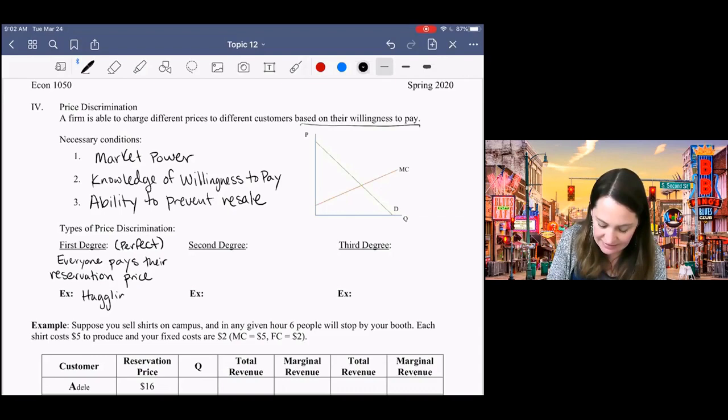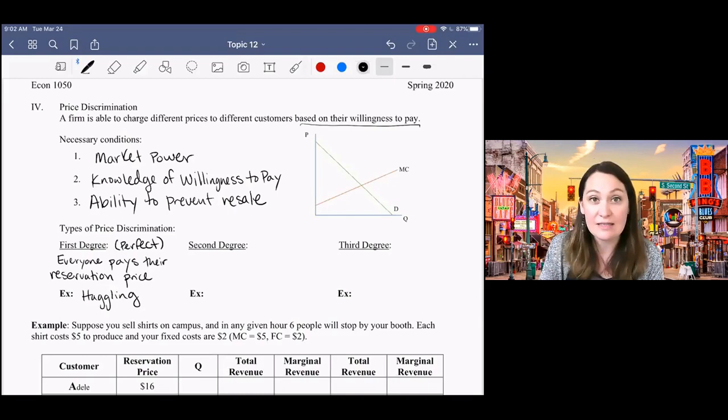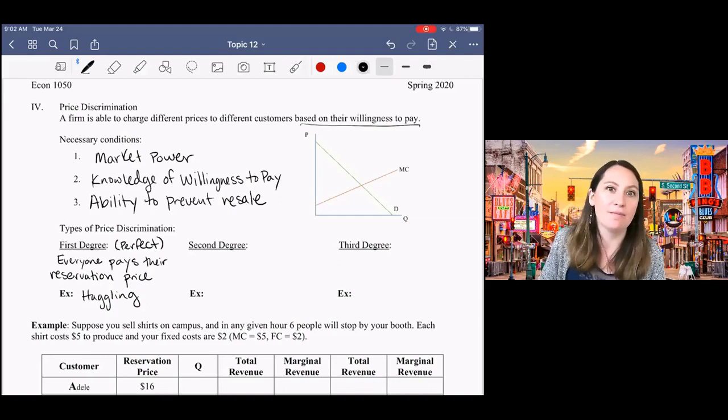The first is haggling. Haggling gets us something pretty close to this. If you've ever been to a market where there are no prices, like an antique store, this is common in other countries. In order to find the price, you have to ask the person working at the shop. That person will likely tell you some outrageously high number. They will say that t-shirt costs $200. The reason why they start out at a really high price is that haggling is uncomfortable. Particularly for Americans, haggling is really uncomfortable.